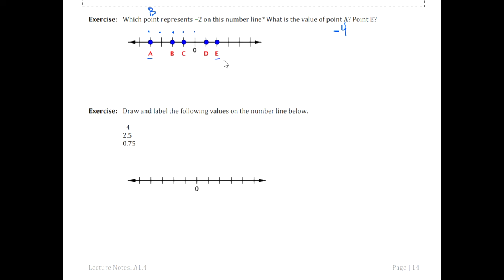Point E is to the right of zero, therefore it's going to be a positive number. Starting at zero, we go 1, 2 units to the right to get to E. We can write that with a positive symbol in front of the 2, or simply as 2 without the symbol — the positive sign is optional for positive numbers. The negative sign, though, is required if you have a negative number.